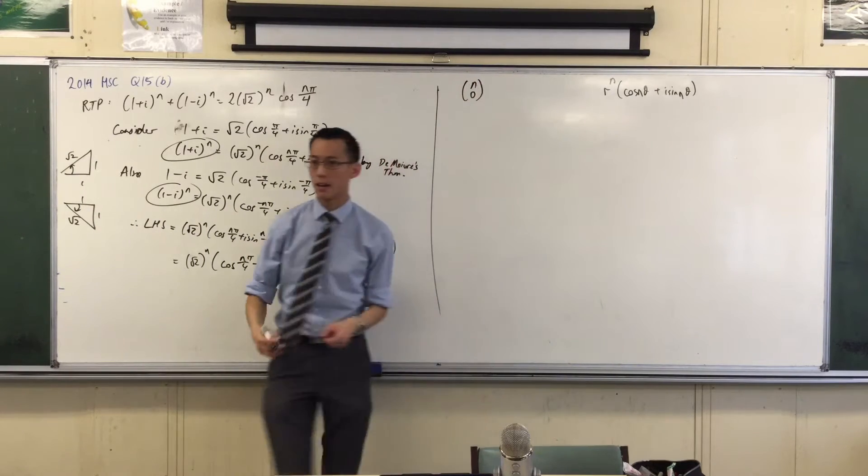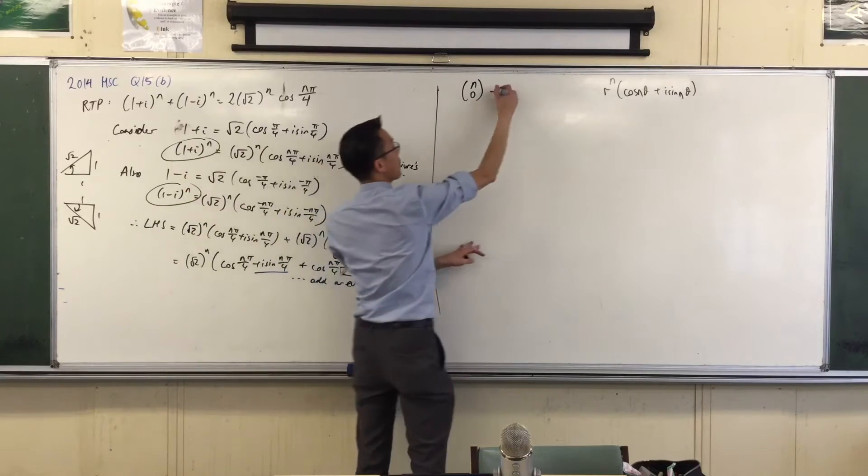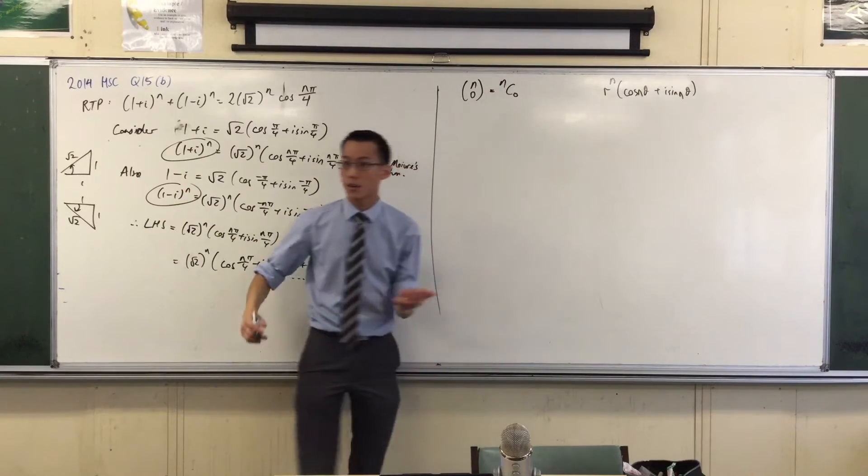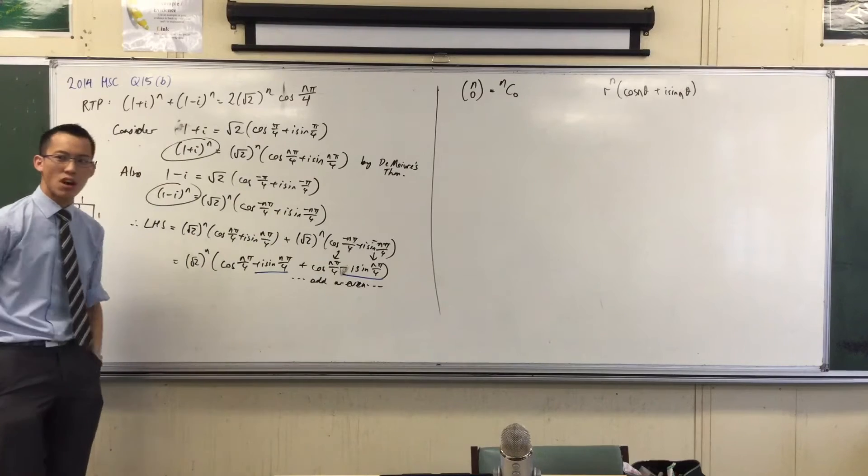It's actually a series because you're adding up some things. But what is that? What is that notation? This, for example, that. This is binomial, isn't it?